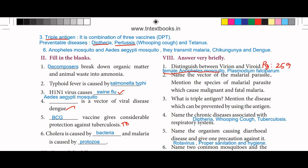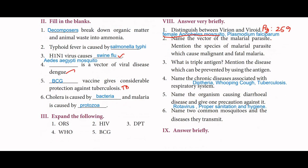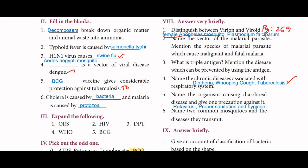Fourth: name the chronic diseases associated with the respiratory system — diphtheria, whooping cough, and tuberculosis. Fifth: name the organism causing diarrheal disease and give one precaution against it. Rotavirus causes diarrheal disease. Precaution: proper sanitation and hygiene.